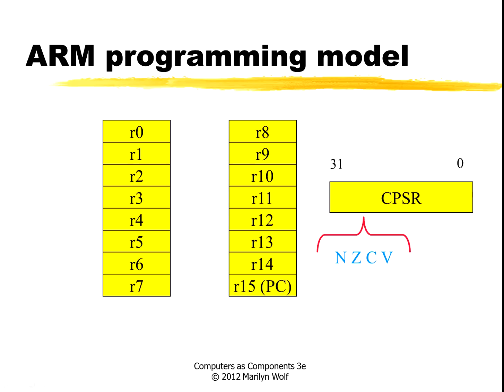The programming model is the set of registers visible to the programmer. The main registers we'll be concerned with are the general purpose registers R0 through R15 and the current program status register.